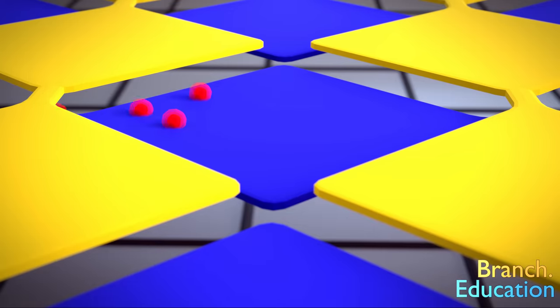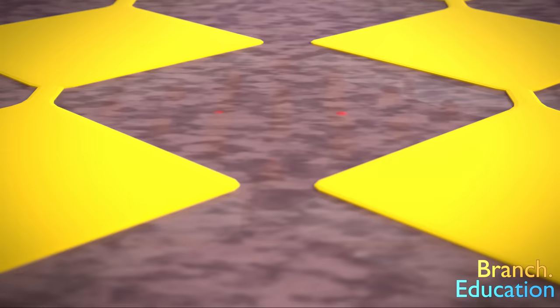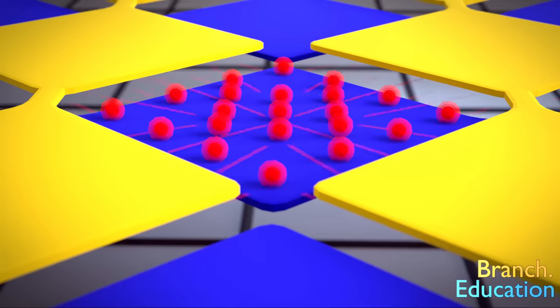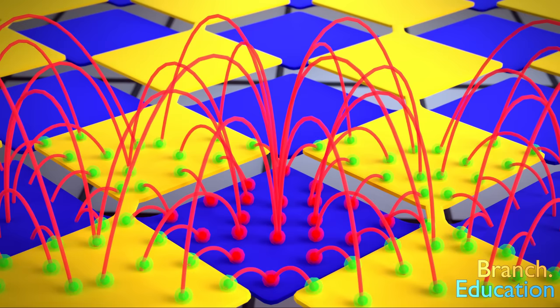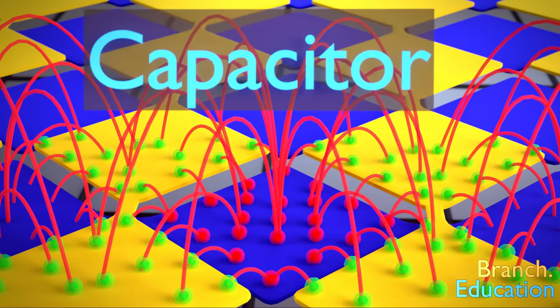Say we build a bunch of electrons on this blue diamond. However, because there is an insulator in the way, the electrons cannot move. The electrons generate a negative electric field, which causes a bunch of positive charges to build up on the yellow diamond. This is called a capacitor.